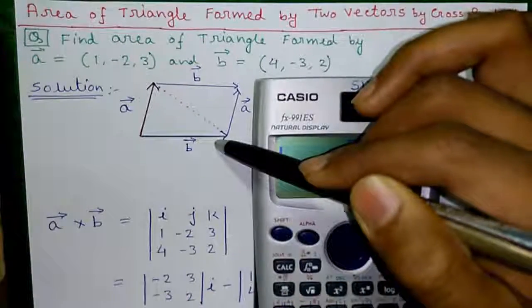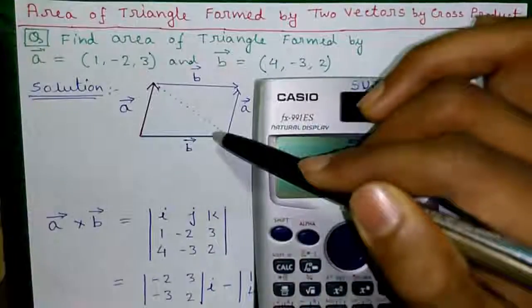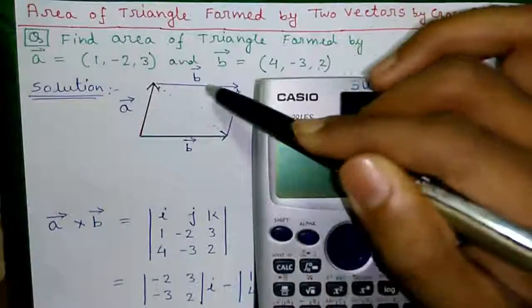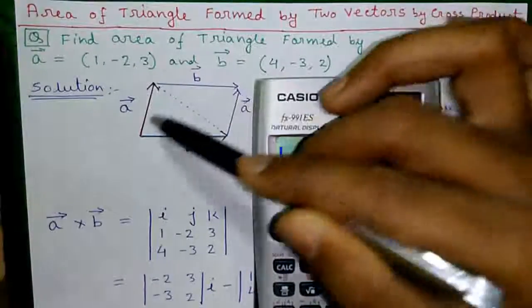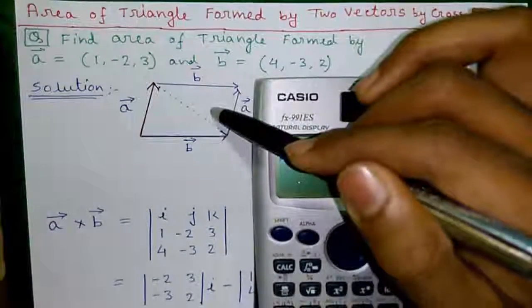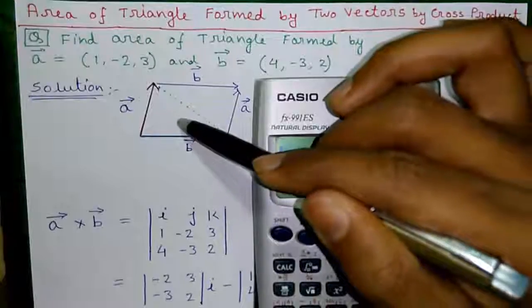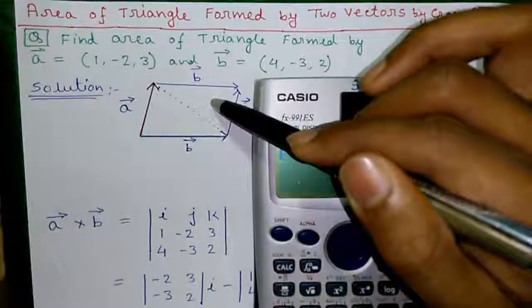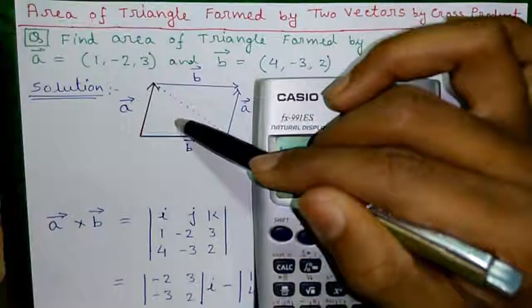So for now what we will do? We will draw two parallel vectors. This is original vector B. We will draw another parallel vector B. This is original vector A. We will draw another parallel vector A. This will form a parallelogram. Now if we find out area of this parallelogram and divide that area by 2 we will get area of the triangle.